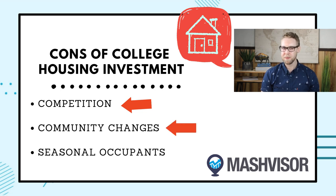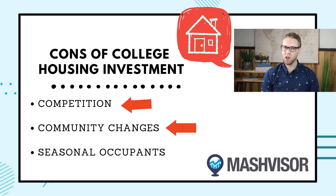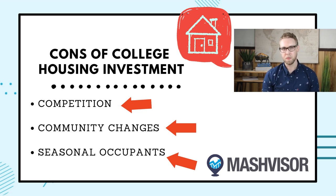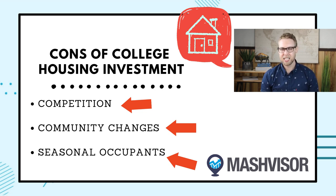Community changes are another concern. College towns can be rather unpredictable. For example, if a large university decides to expand or build a new campus somewhere, this can affect property values surrounding it. Additionally, college towns are seasonal, meaning there may be vacant properties during the summer months when students are not in school. You can make vacation homes out of your properties, but if you're not interested in that, it can make it difficult to generate a consistent income from this kind of rental alone.